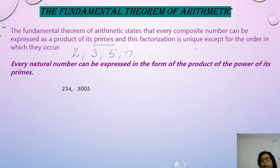On the other hand, composite numbers — like 4, 8, 9, or 12 — are all composite numbers, and you will notice that they can be written as a product of their primes. So this concept about composite numbers, that they can be written as a product of their primes, is expressed in the Fundamental Theorem of Arithmetic.